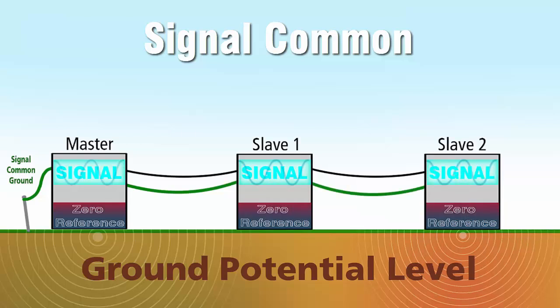The signal common ensures that each device will have the same zero-volt reference and will not inadvertently exceed the voltage limits of the hardware while transmitting data, because of potential level differences in the transmitter and receiver locations.